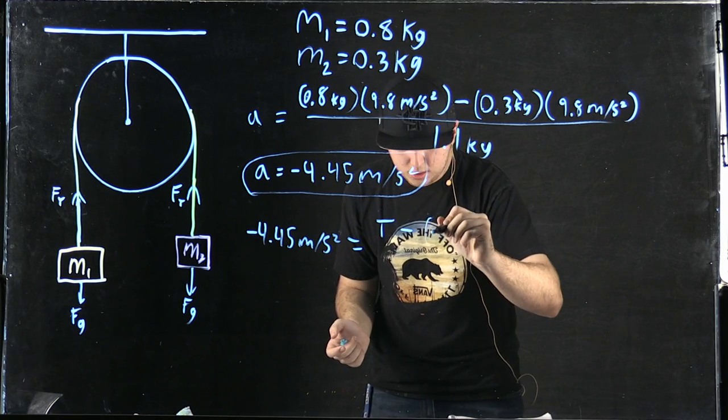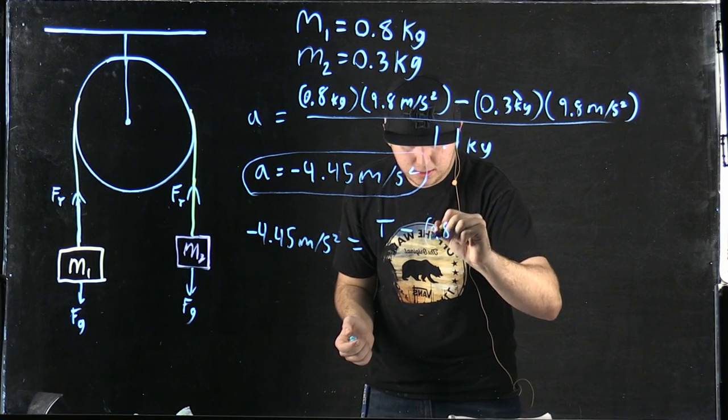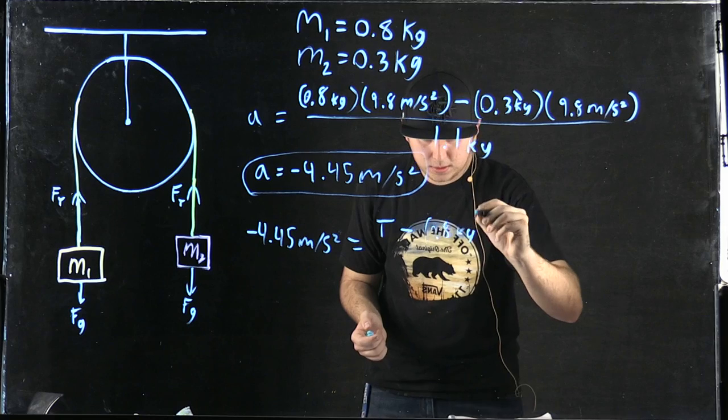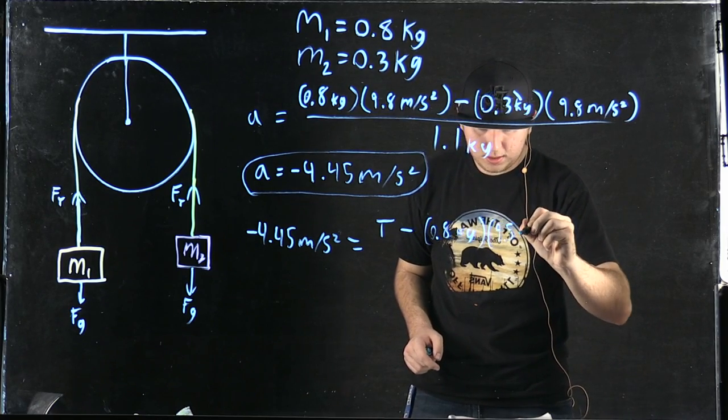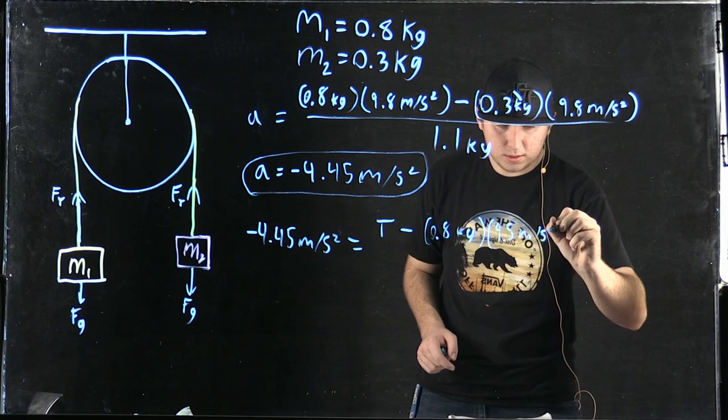which gives us the force. So we have 0.8 kilograms times 9.8 meters per second squared,